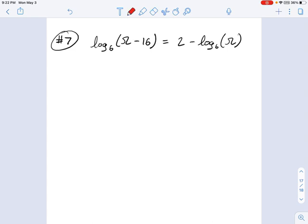So what I want to do, like usual, I would love to get all the logarithms on one side if possible. So let's go ahead and do that, and we'll just see what happens. Log base 6 of omega minus 16 plus log base 6 of omega equals 2. Okay, and now, according to the product rule,